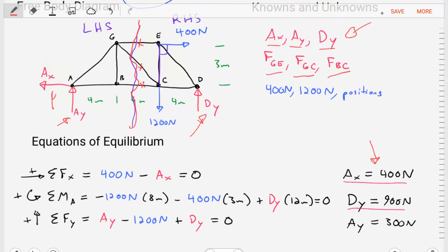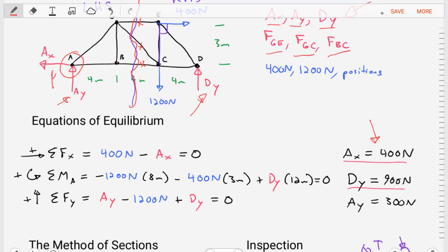We can do the sum of the moments about point A, which will give us a nice and simple equation. And we can rearrange and solve then for DY, which is equal to 900 Newtons.